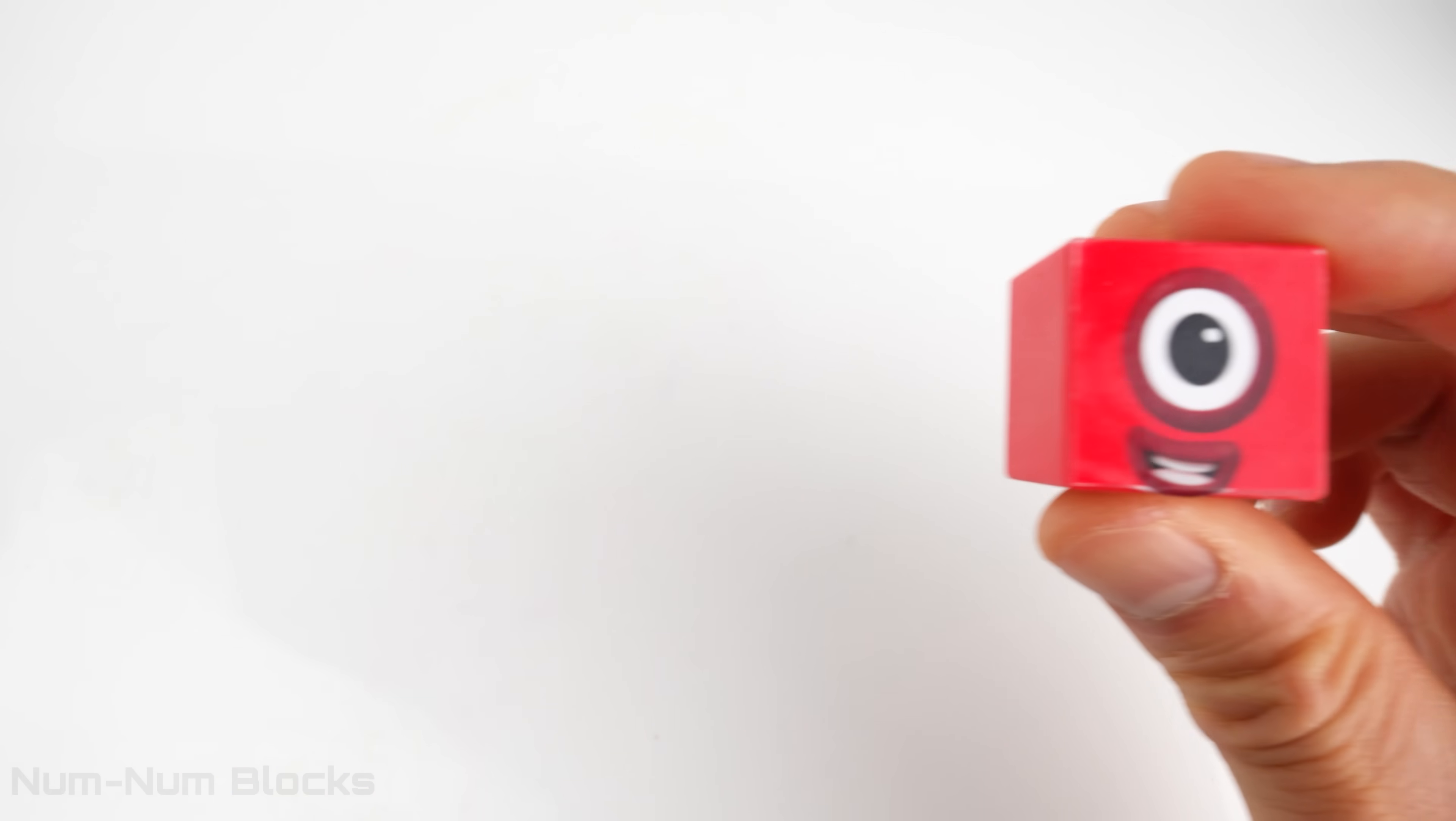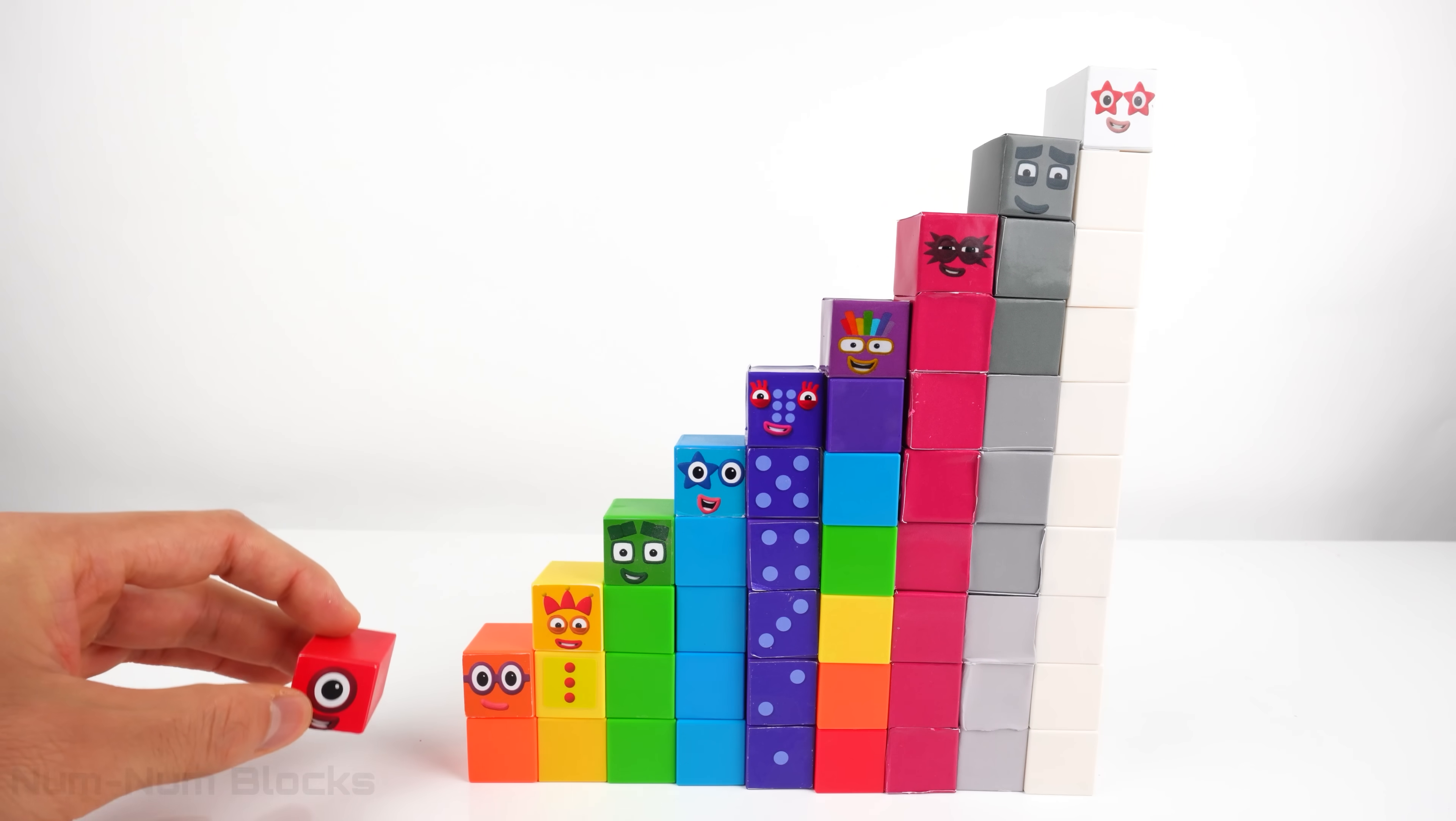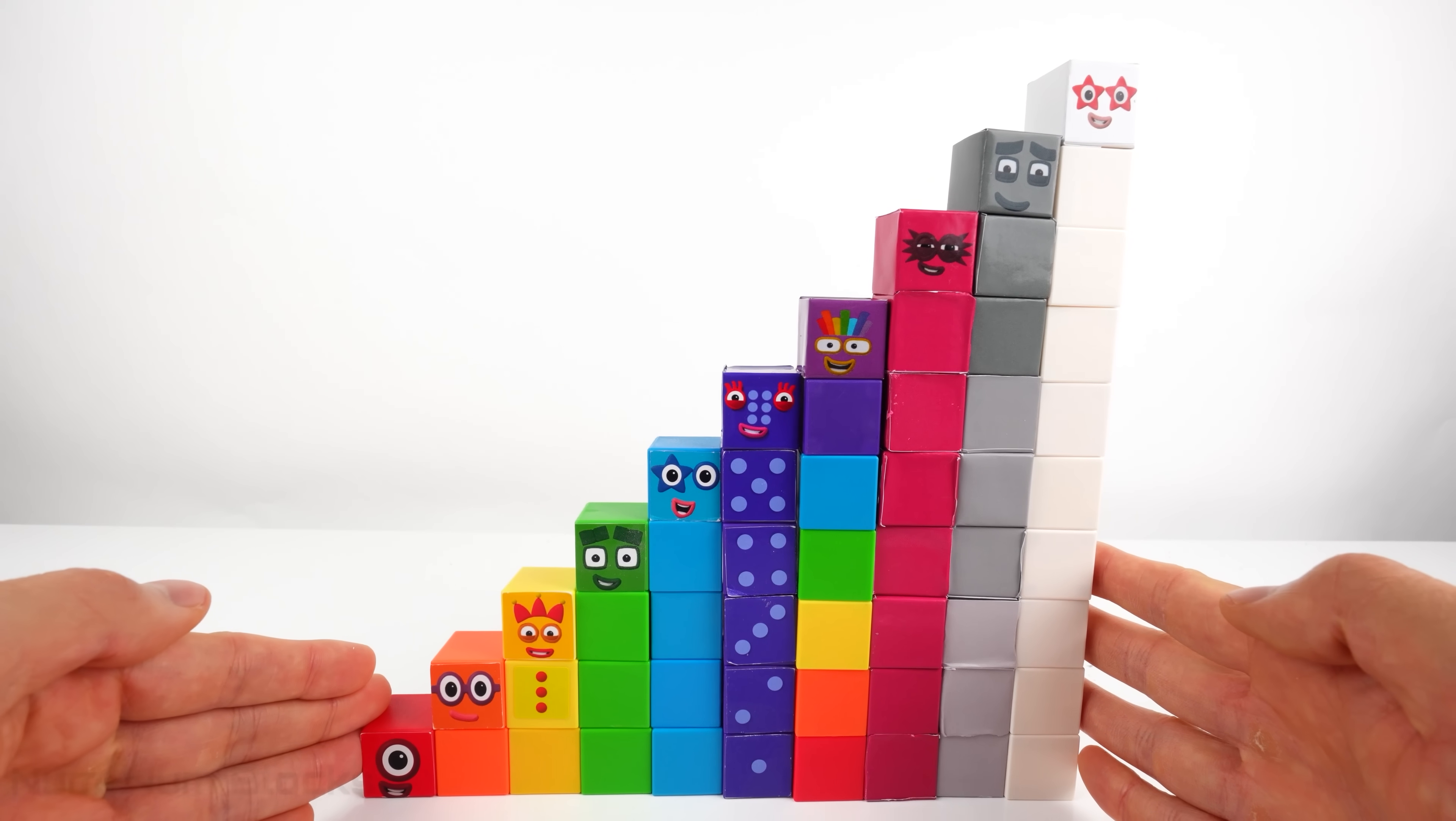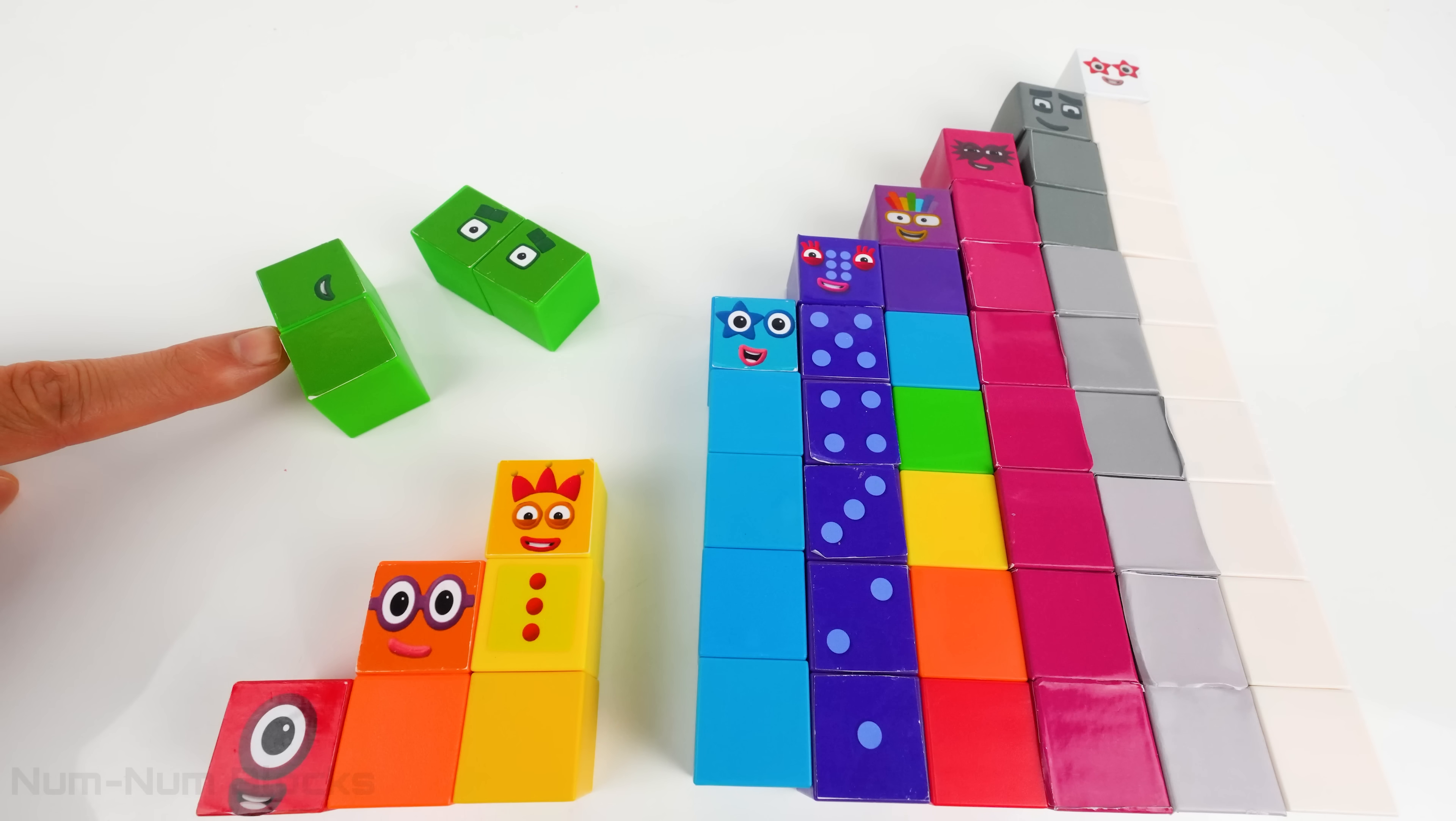Only one number left. It's one. One goes to the far left of our step squad. We did it! We built the step squad. We started from ten and we worked backwards to one.